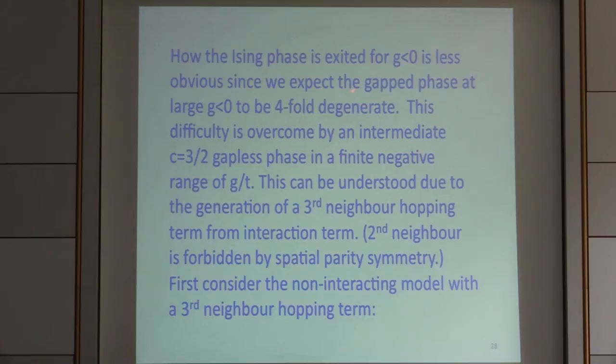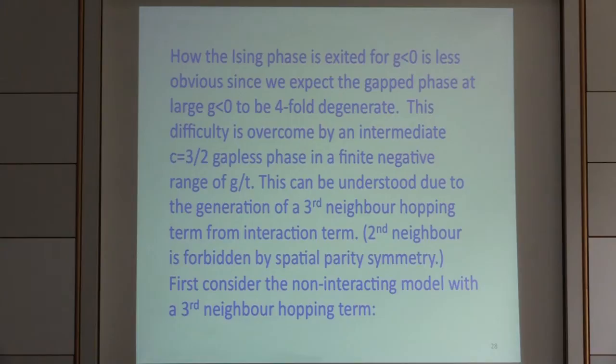Now let me turn to what happens for g less than zero, corresponding to repulsive interactions. The Ising phase will be stable for a range of g less than zero. The question is how we exit the Ising phase into some sort of gapped phase. In the strong coupling limit, we expect a four-fold degeneracy from the anti-ferromagnetic-type state — up-down or down-up — and we could shift everything over by one Majorana site. That four-fold degeneracy doesn't fit an Ising transition, which expects only two-fold degeneracy, suggesting this will not be a tricritical Ising transition.